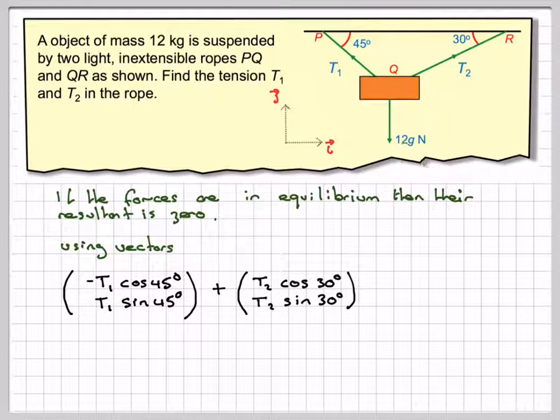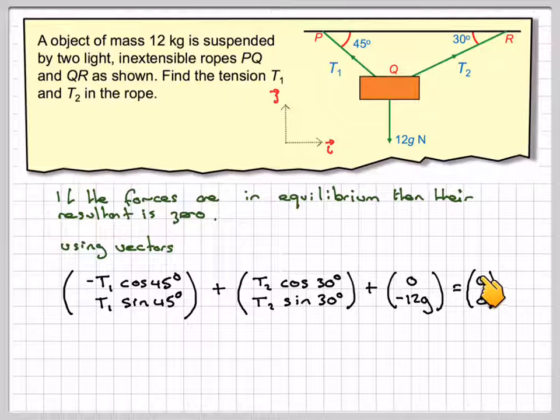And then we've got to add to that minus 12G, and the resultant will be the null vector, which is (0,0), i.e. it's in equilibrium. And then for this to be true, the components must add up correctly.